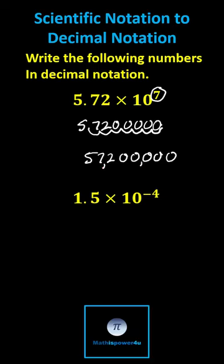For the second example, we begin with 1.5. Because we're multiplying by 10 to the power of negative four, the number gets smaller. We move the decimal point four places to the left.